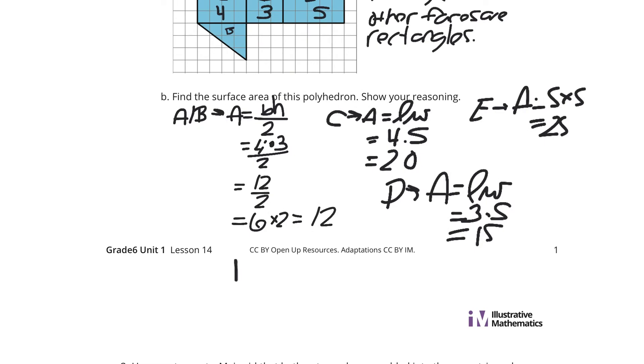And now, if I take these five faces, the 12 for the two triangles, the 20 plus the 25 plus the 15, we will get a surface area of 72 square units.